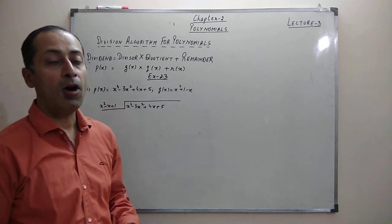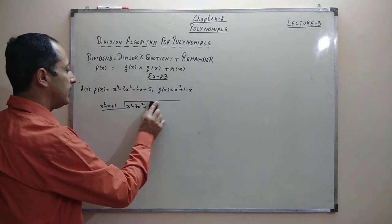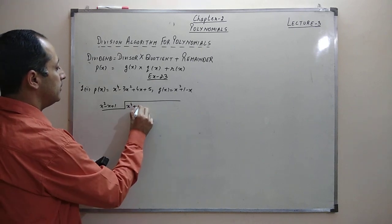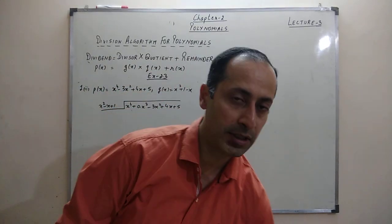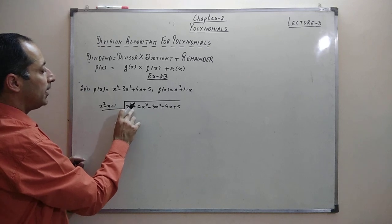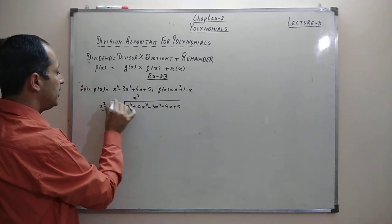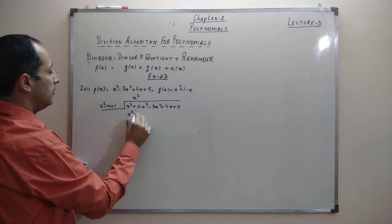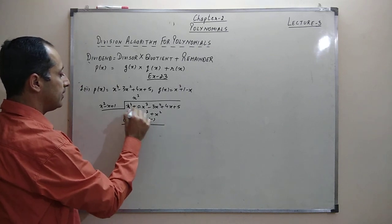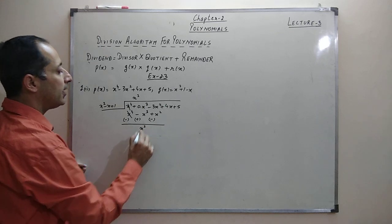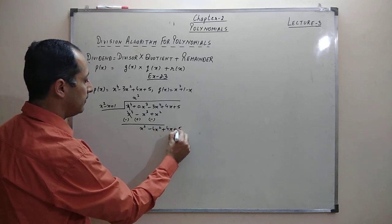You might be thinking there is no cubic term in the dividend. Since the cubic term is not there, its coefficient is 0. So I rewrite p(x) as x⁴ + 0·x³ - 3x² + 4x + 5. Now, by what number should I multiply x² to get x⁴? The answer is x². I multiply the complete divisor by x² to get x⁴ - x³ + x². After changing signs for subtraction, the x⁴ cancels, giving x³ - 4x² + 4x + 5.